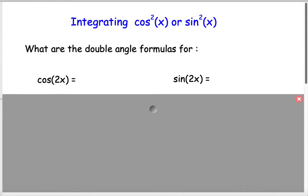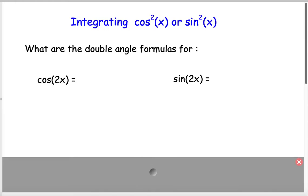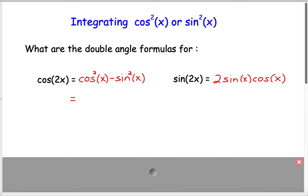Let's look at integrals with sines and cosines. Recall the double angle formulas: sine of 2x equals 2 sine x times cosine x. For cosine of 2x, that's cosine squared x minus sine squared x. We also have two other versions: replacing sine squared with 1 minus cosine squared gives 2 cosine squared x minus 1; replacing cosine squared with 1 minus sine squared gives cosine of 2x equals 1 minus 2 sine squared x. We have three different equations for cosine of 2x, and it depends on the problem which one is more useful.